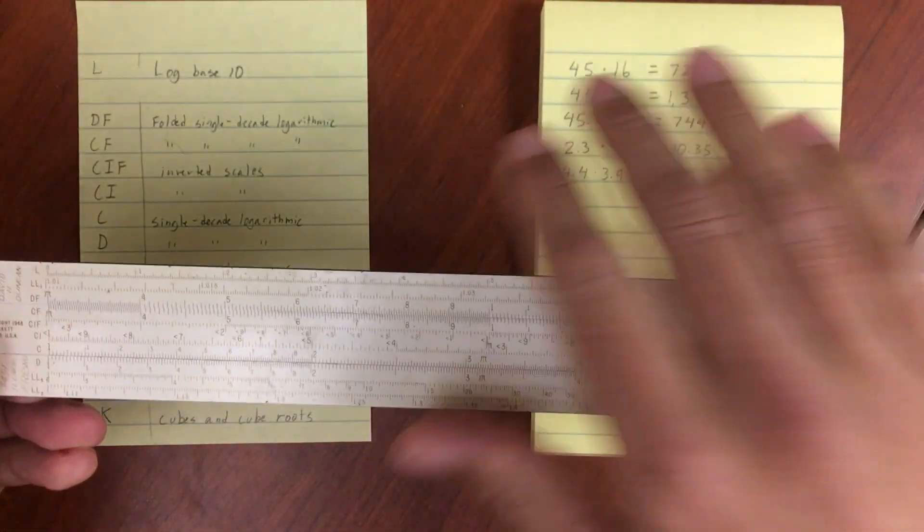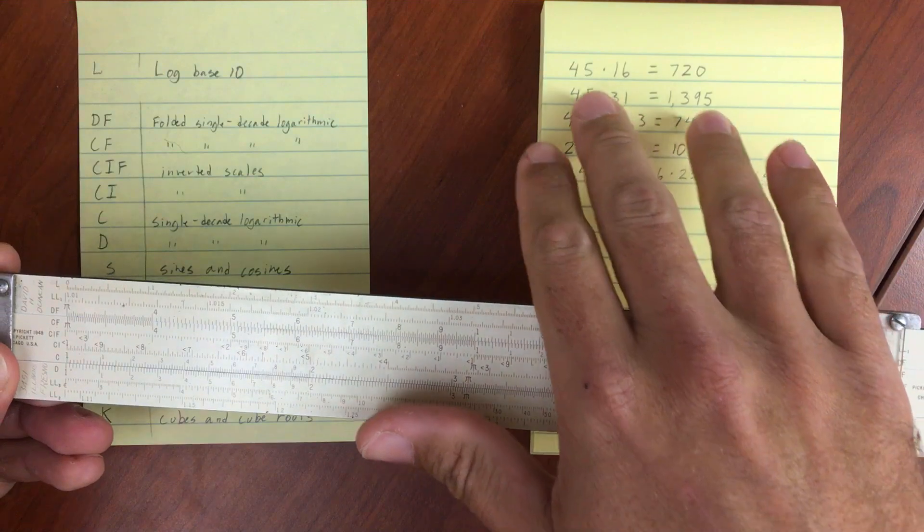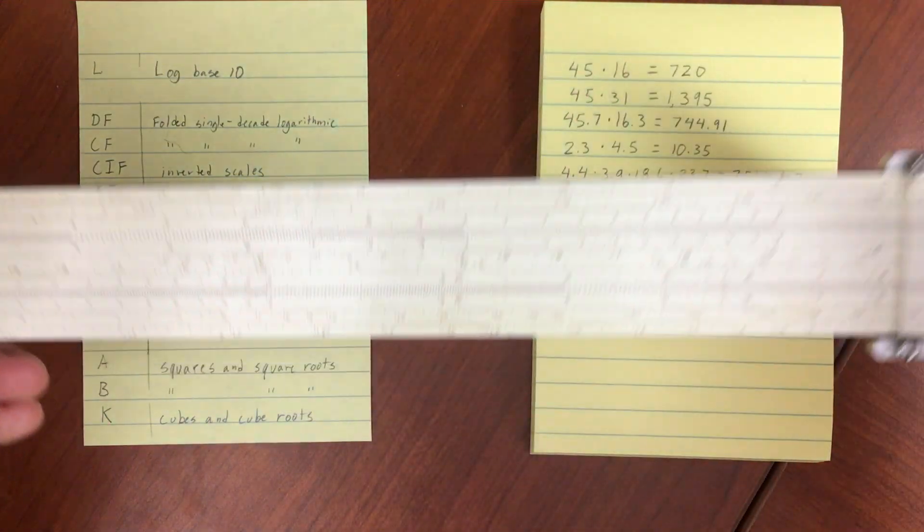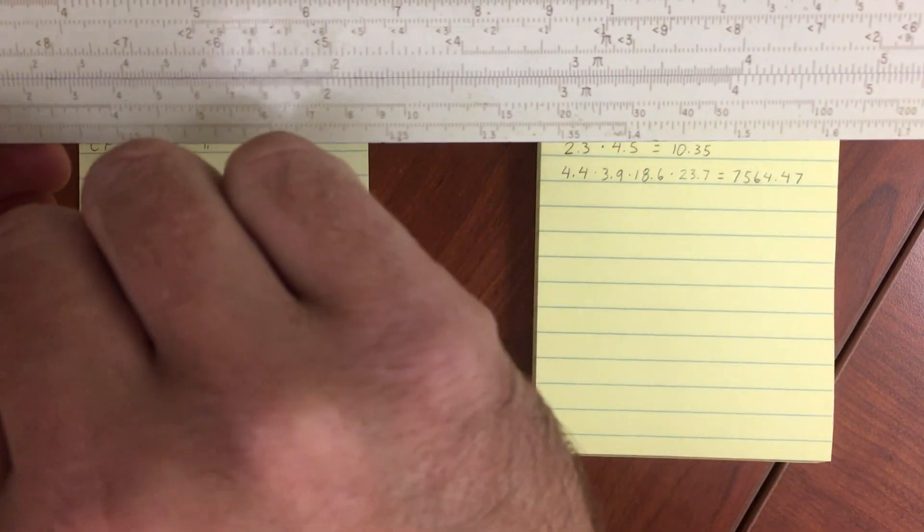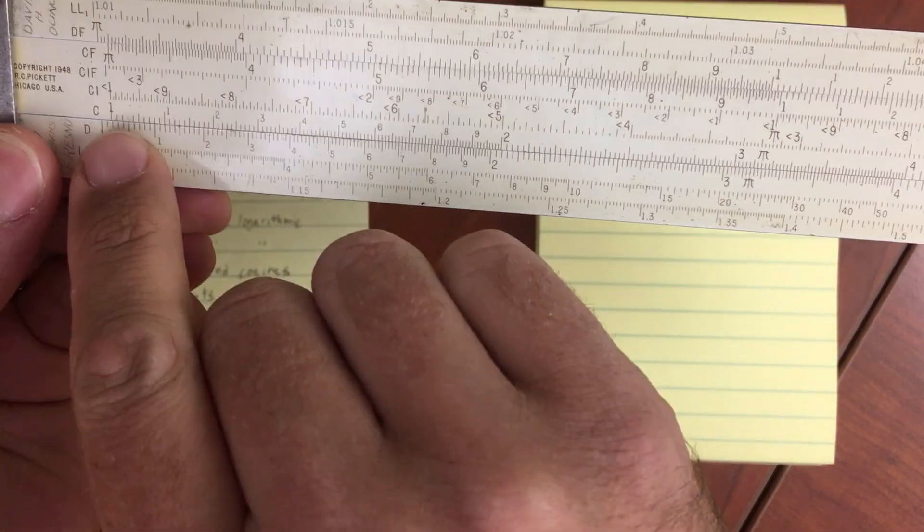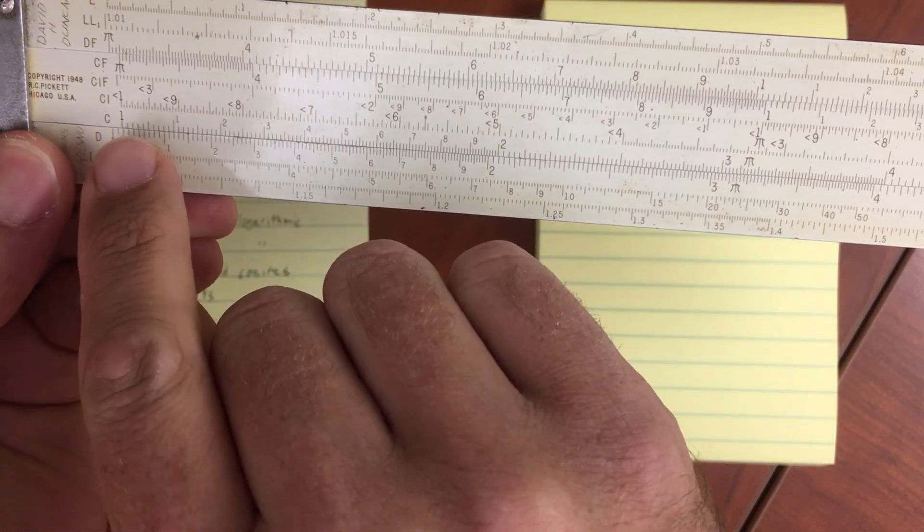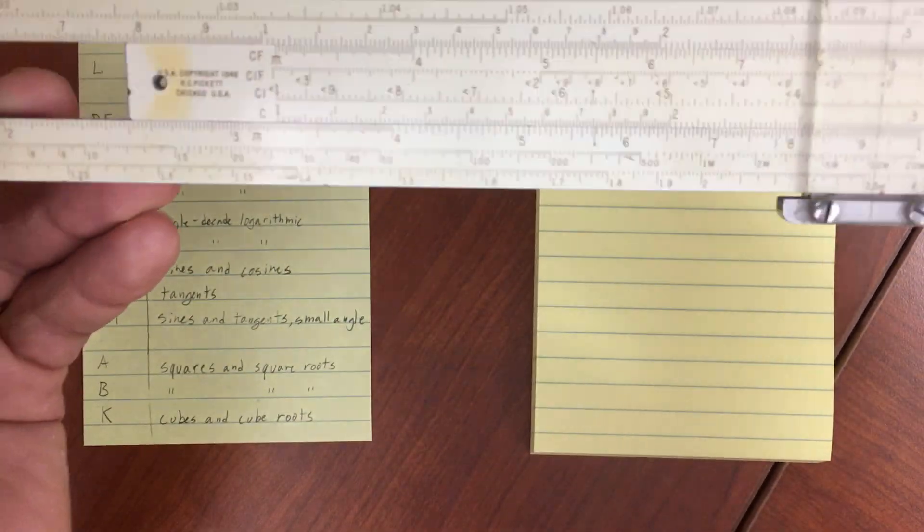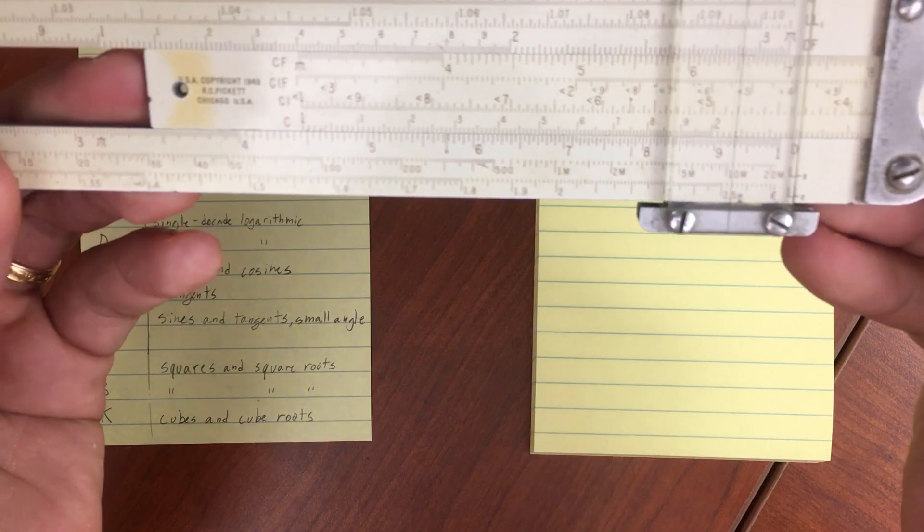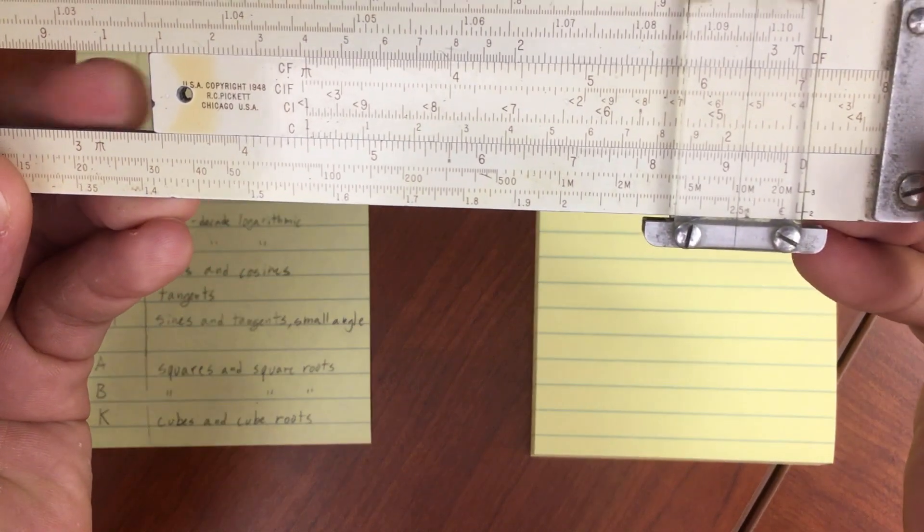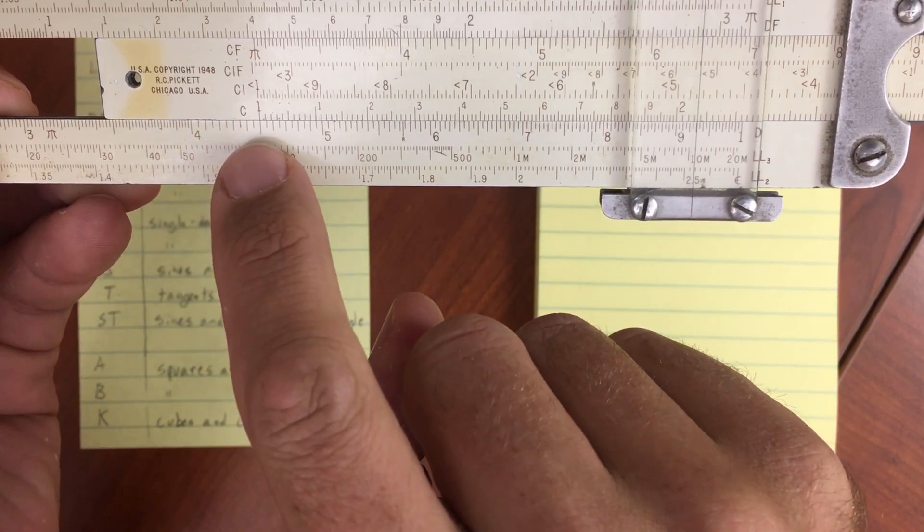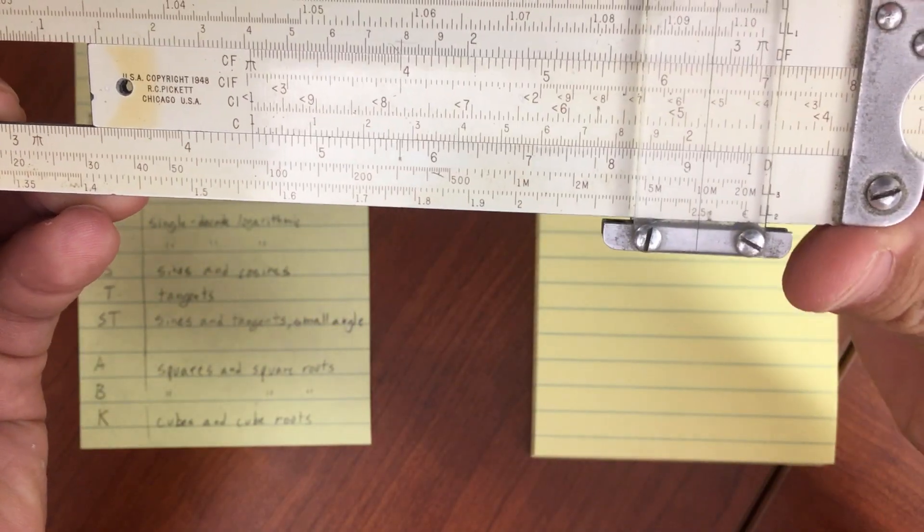So our first number, and remember we're keeping track of the tens place here, our first number is going to be 45 and our second number is going to be 16. So we move the 1 on the C scale to the number on the D scale. So I'm going to move that 1 to 4.5. So that's all the way out here. So 4, 1, 2, 3, 4, 5. 4.5.